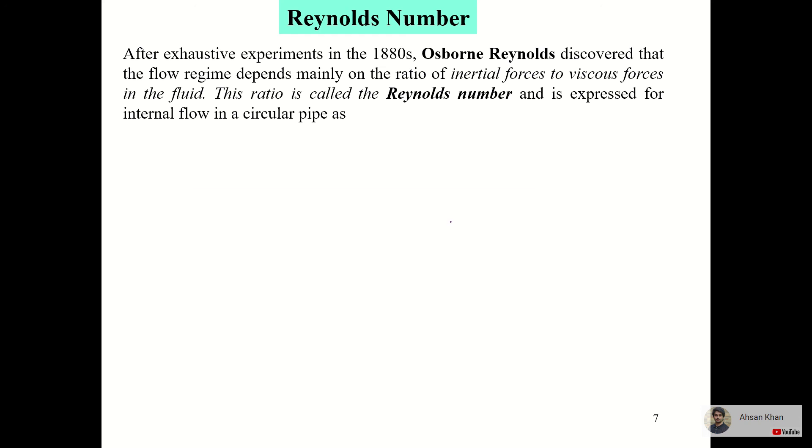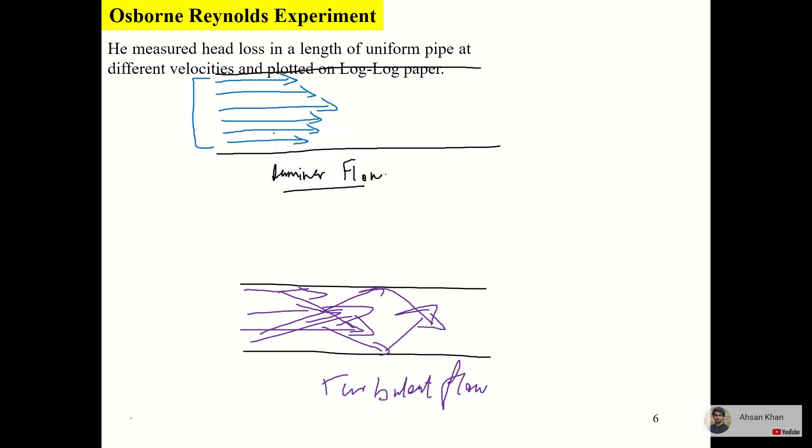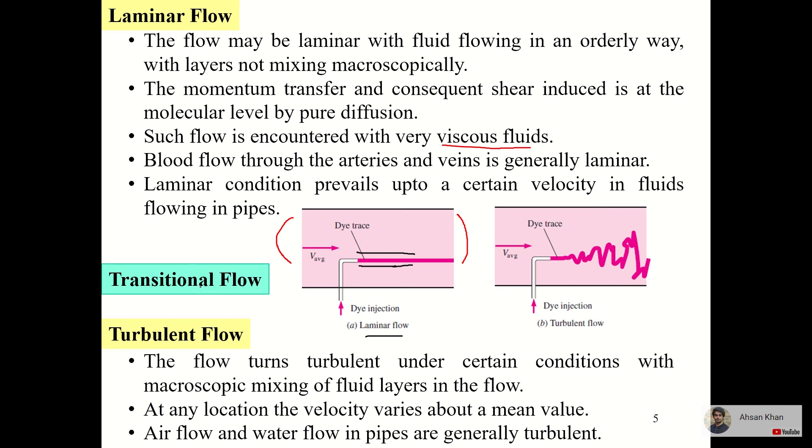For this lecture, I hope you understood about different types of flows: laminar, turbulent, and transition. In the next lecture we will use the Reynolds number formula to explain how we can recognize that the flow is laminar, turbulent, or transition using mathematical parameters. Thank you very much.